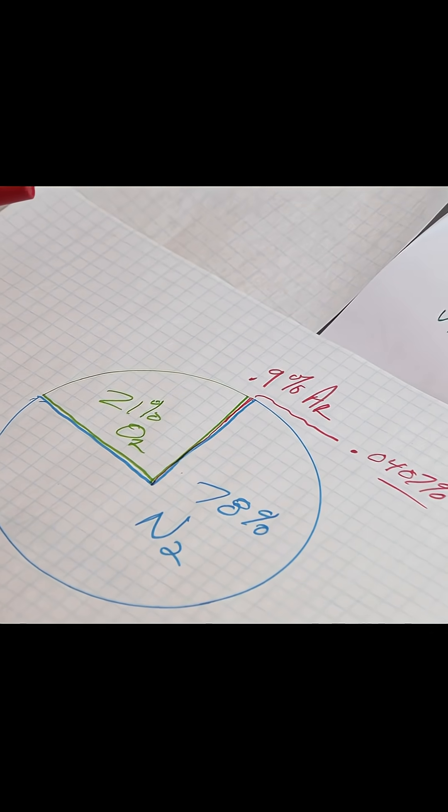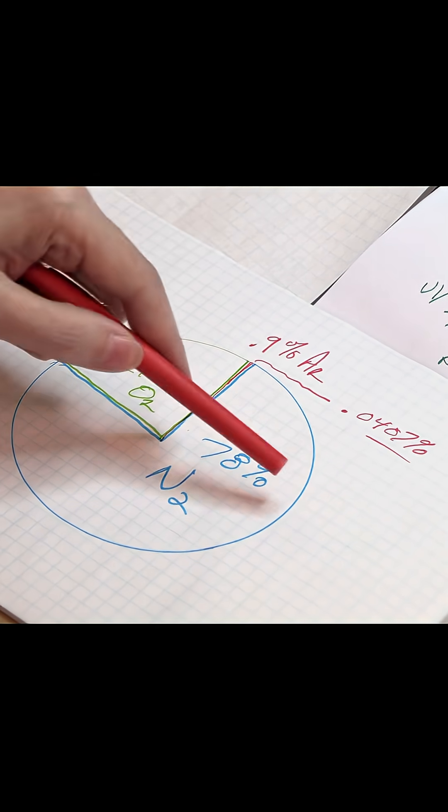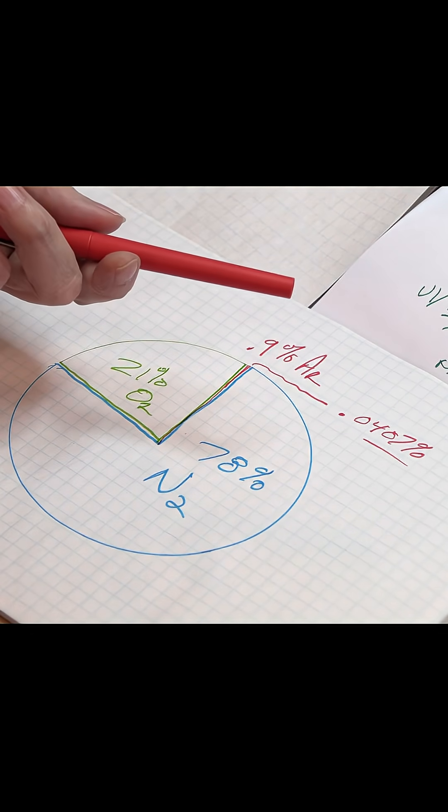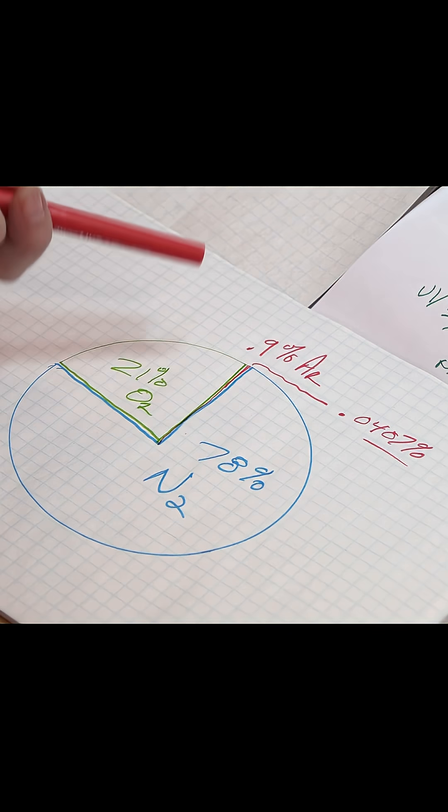It doesn't really matter for the planet what the concentration of CO2 is. Earth doesn't care. In fact, Venus doesn't complain about CO2—Venus says, 'I love CO2.'